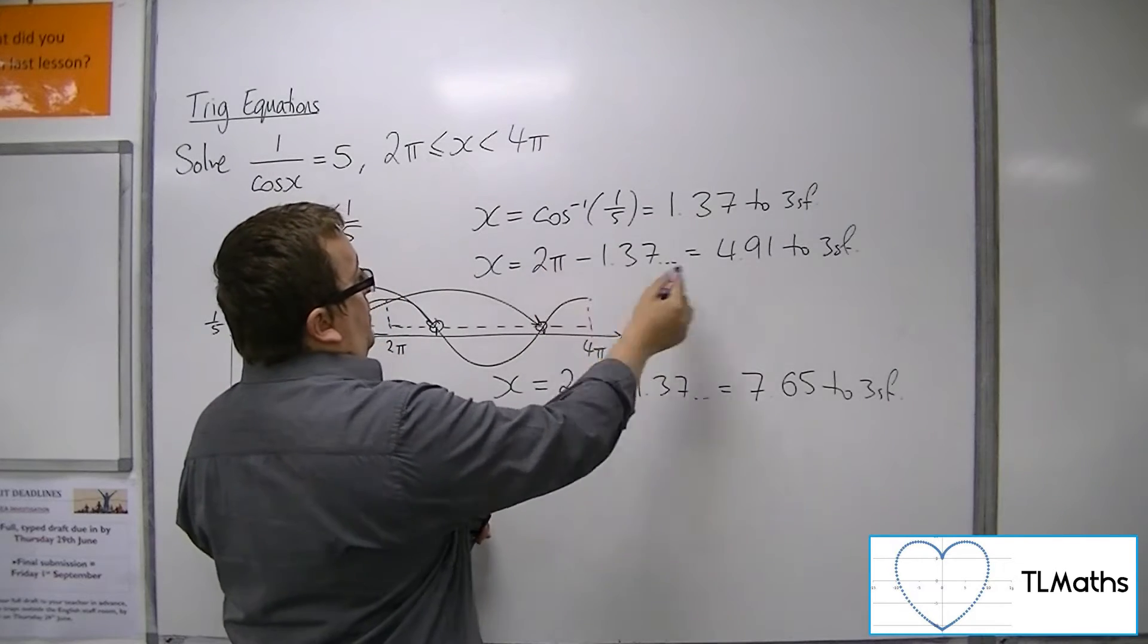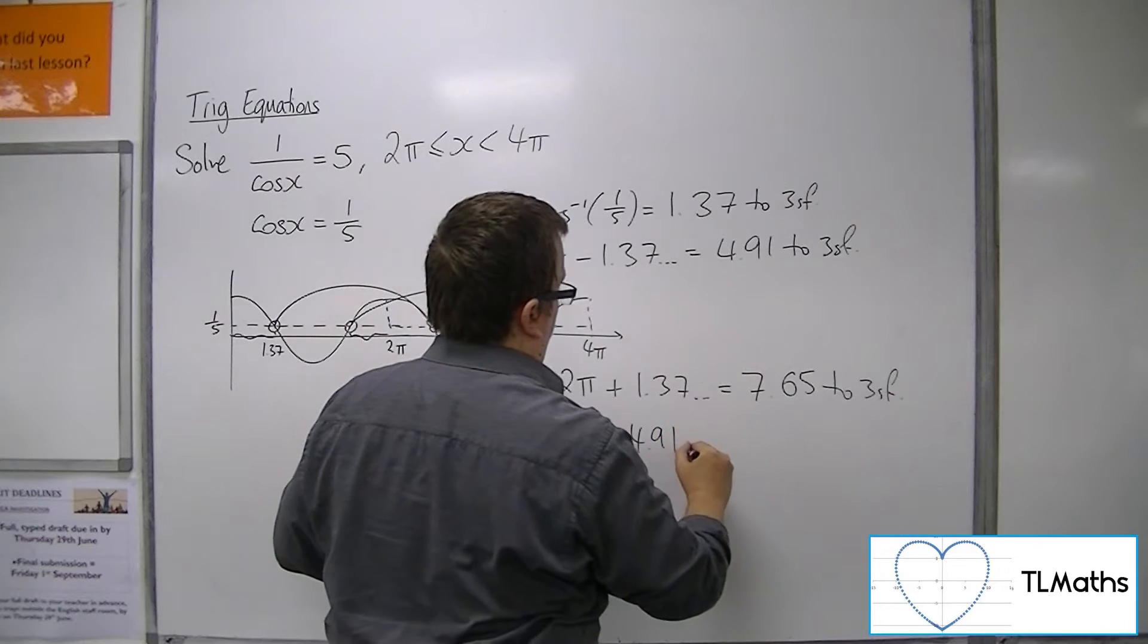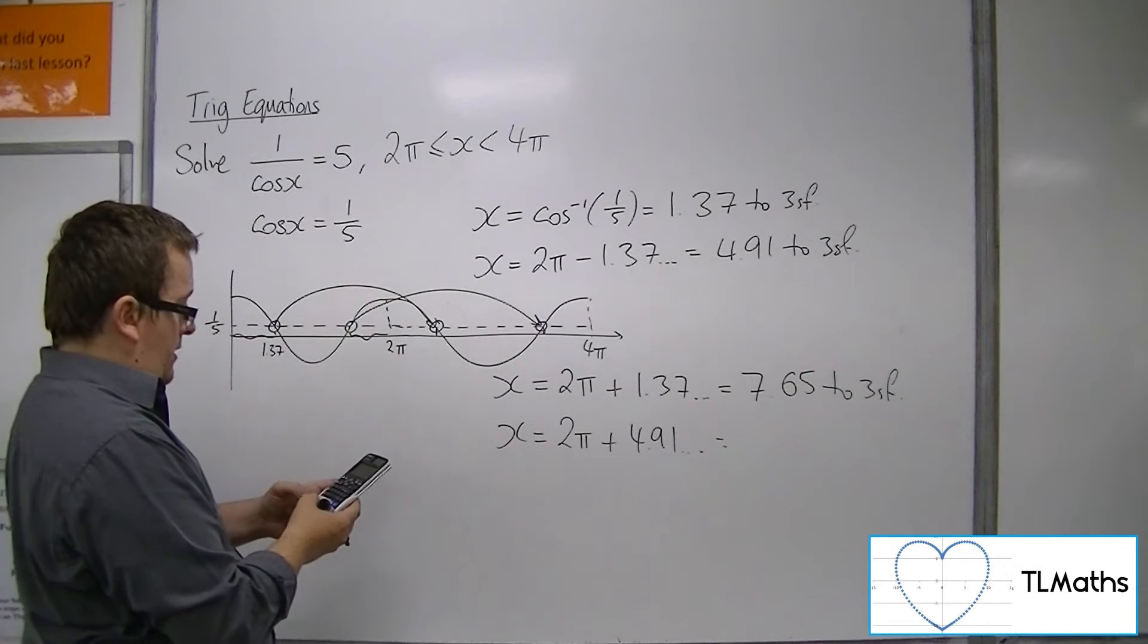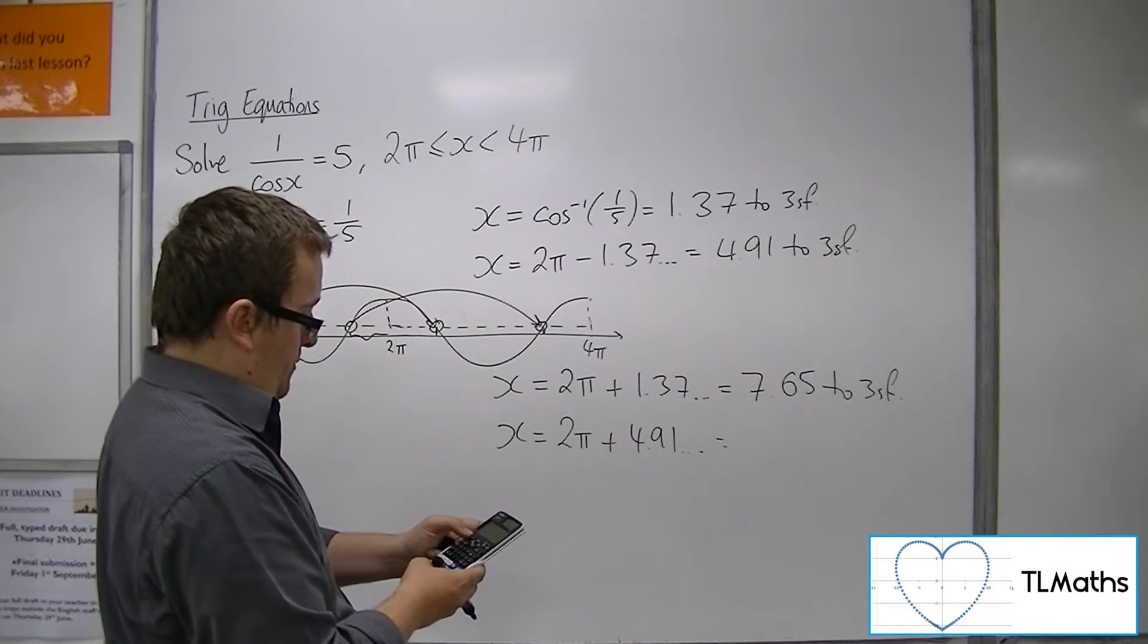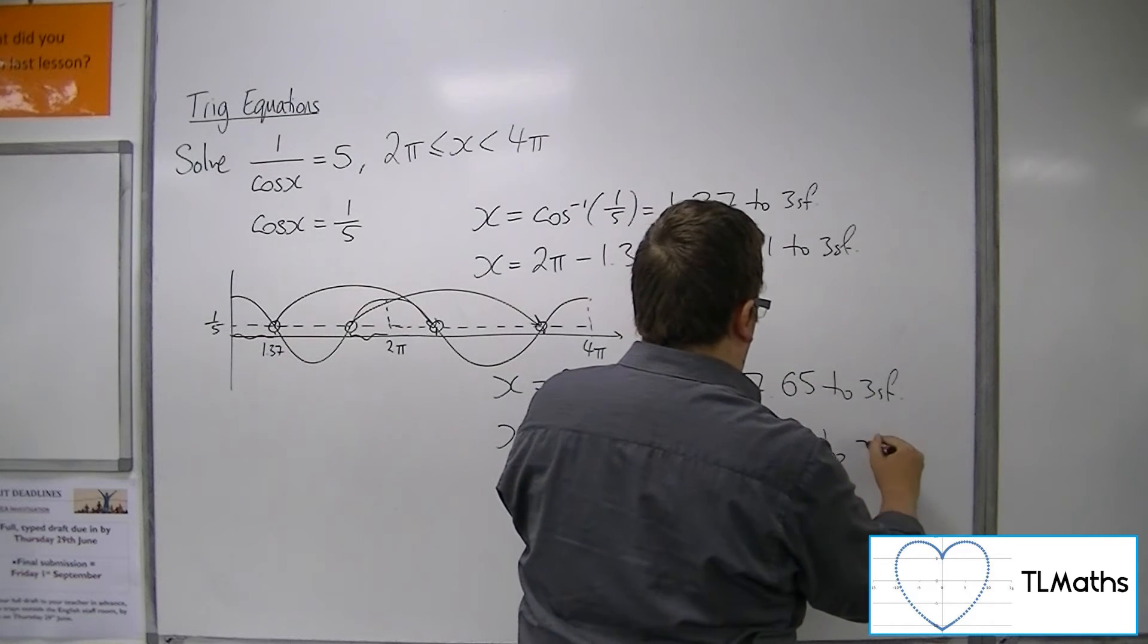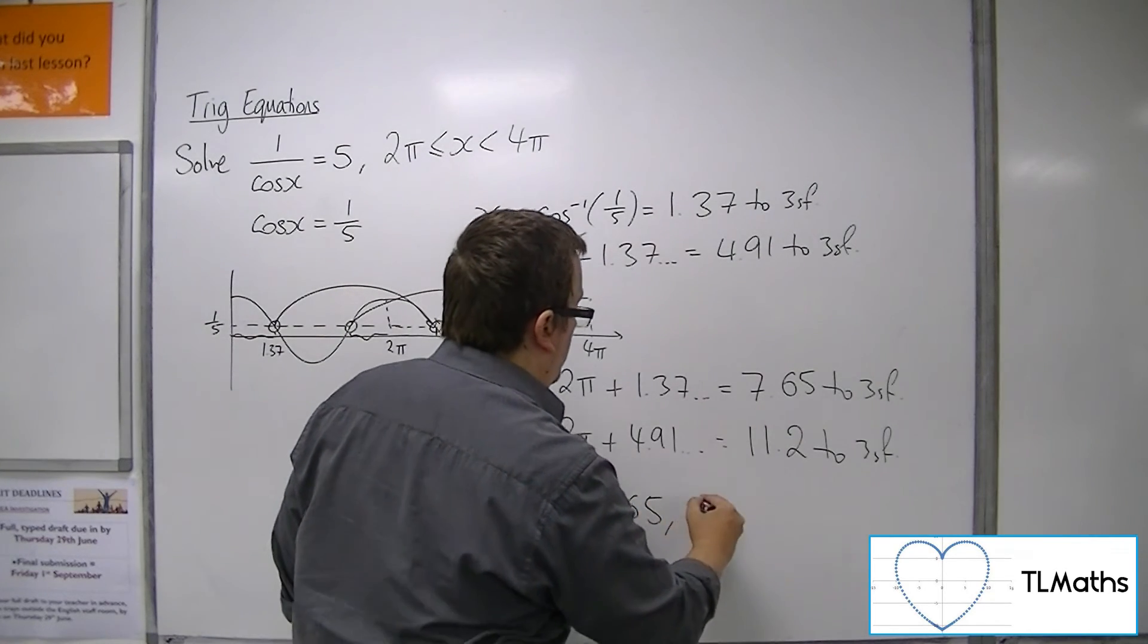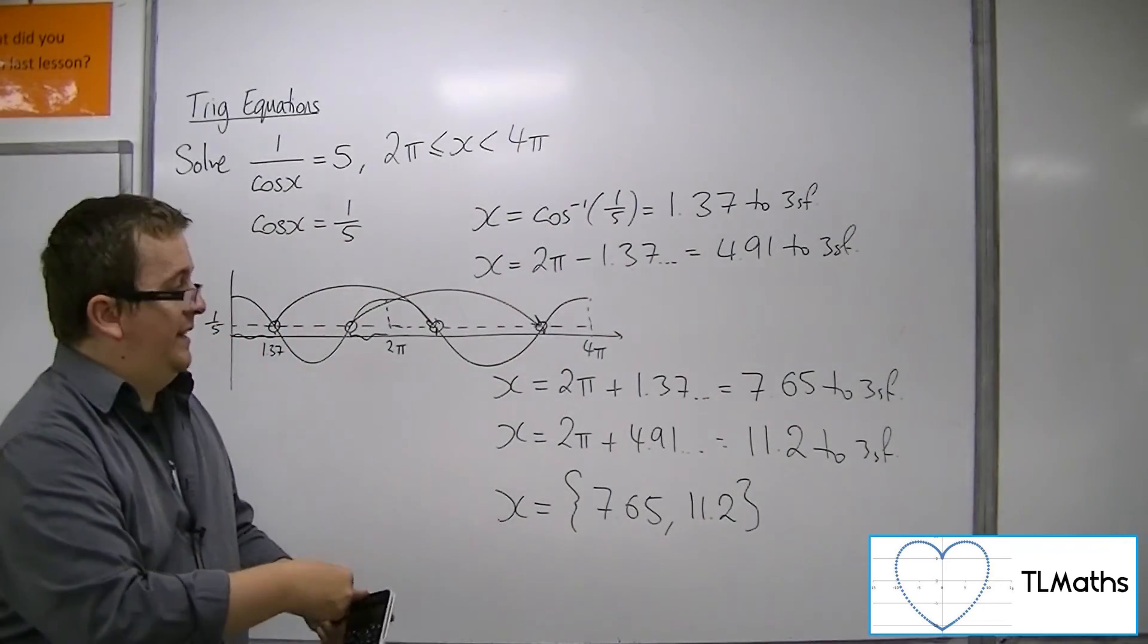And then adding 2π onto this one, so trying to get back to that solution, 2π, take away that answer, then adding on 2π gets me to 11.2 to three significant figures. And so the two solutions are 7.65 and 11.2 radians to three significant figures.